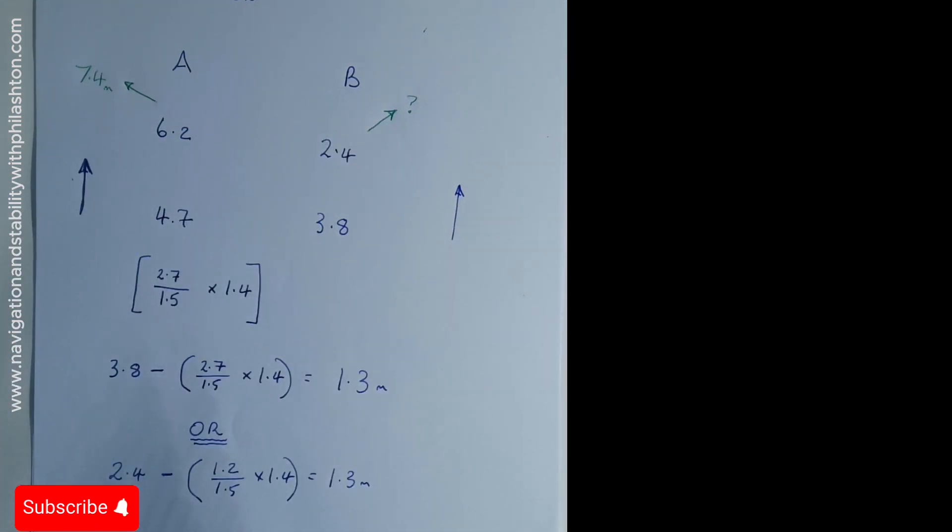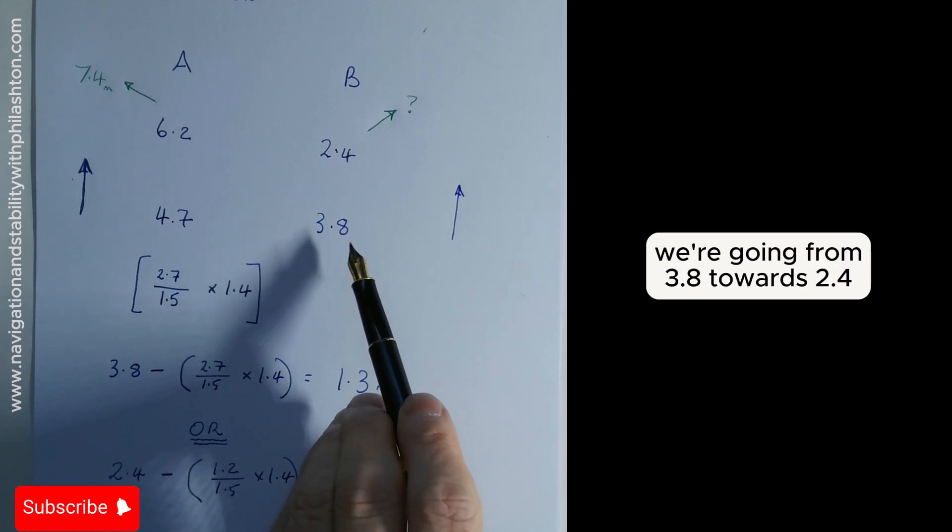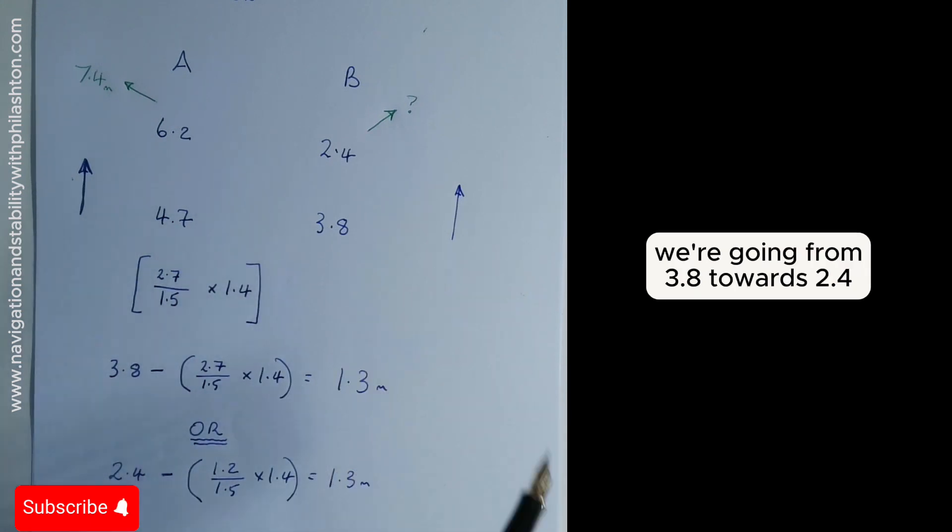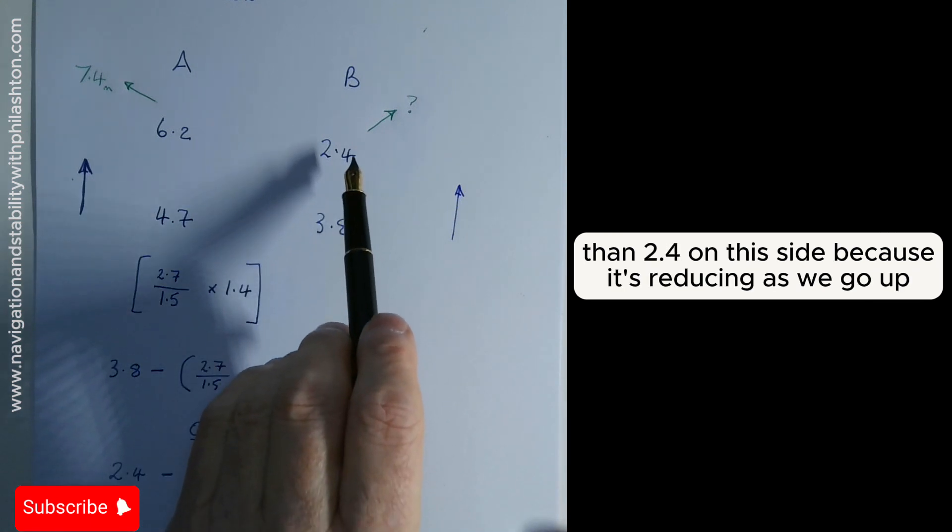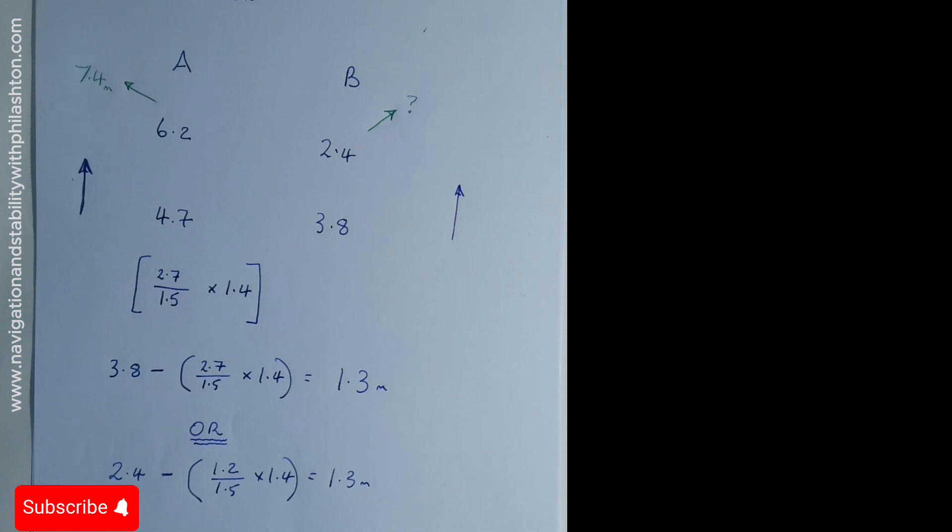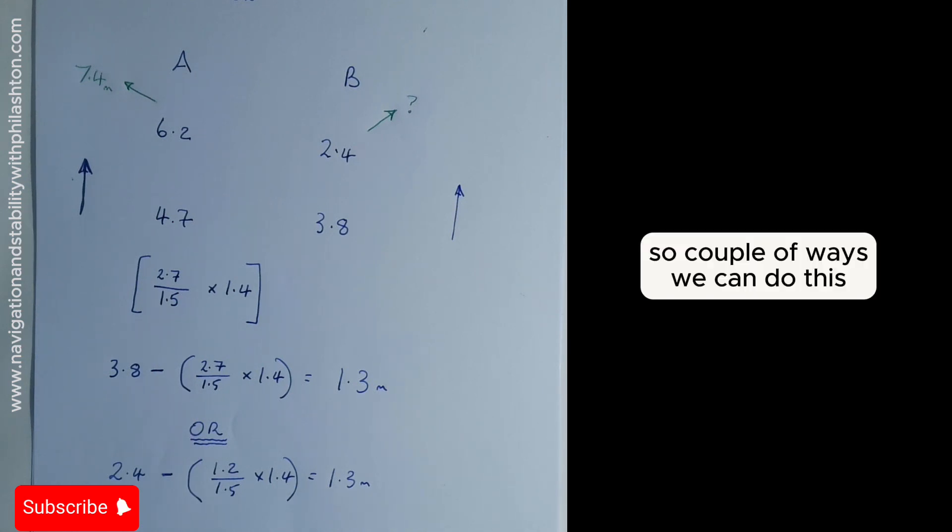require a figure up here. We're going from 3.8 towards 2.4, therefore our value has to be less than 2.4 on this side because it's reducing as we go up. So there are a couple of ways we can do this.